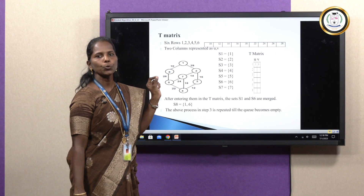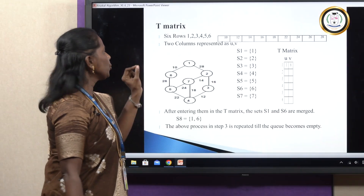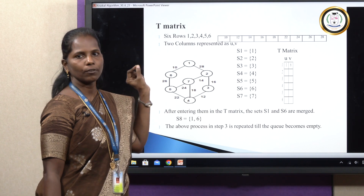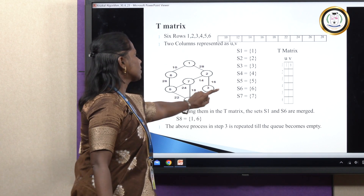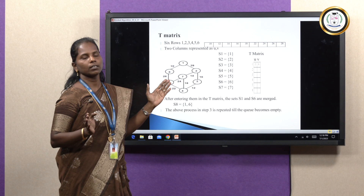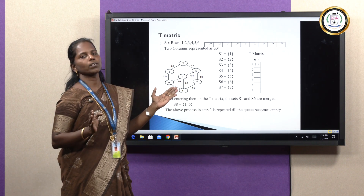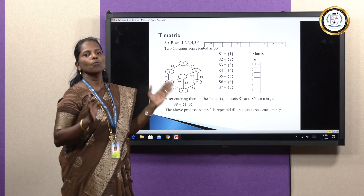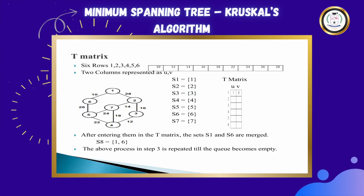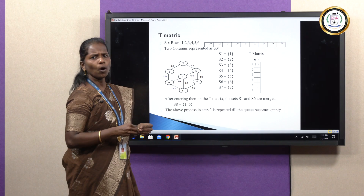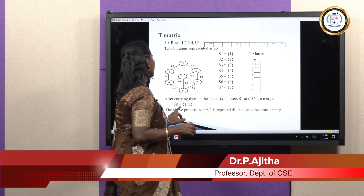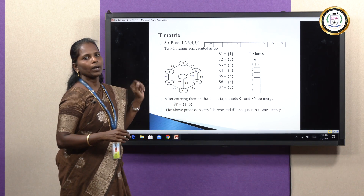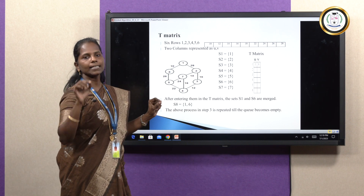Now I have to check whether U and V are in the same set or different sets. U is 1, which is present in set S1; 6 is present in set S6 — they are in different sets. If they are in different sets, enter U and V (1 and 6) in the T matrix. After entering them, merge S1 and S6 to create a new set called S8. Now in my sets I am totally having 8 sets.